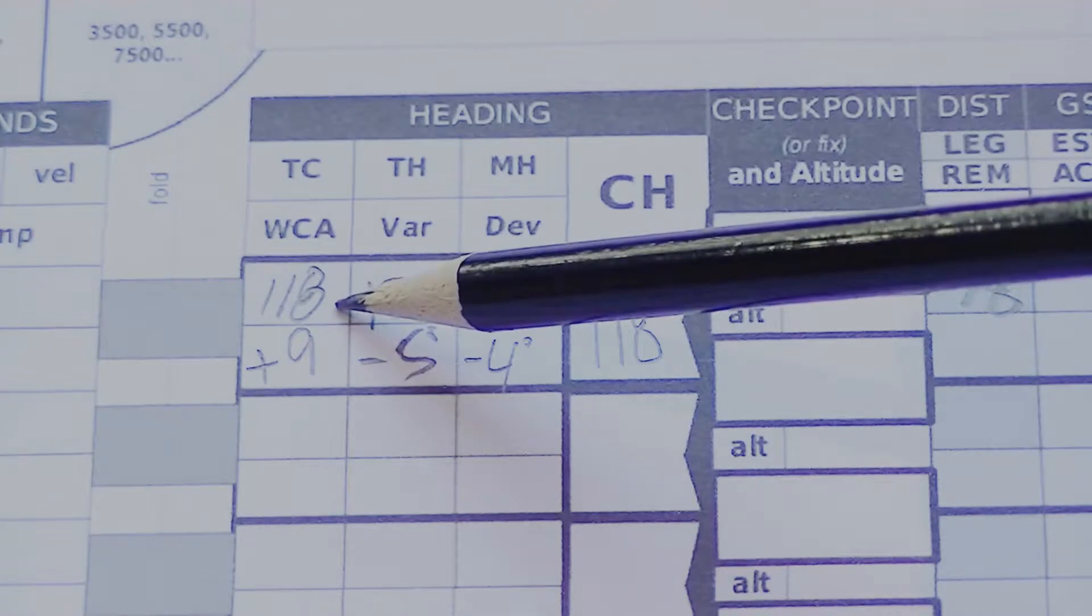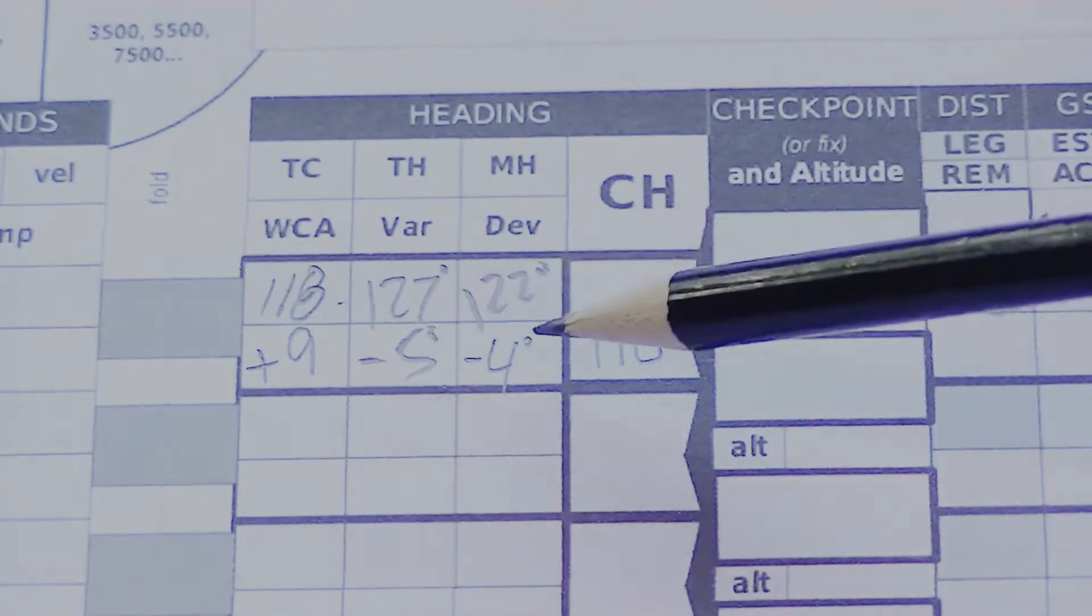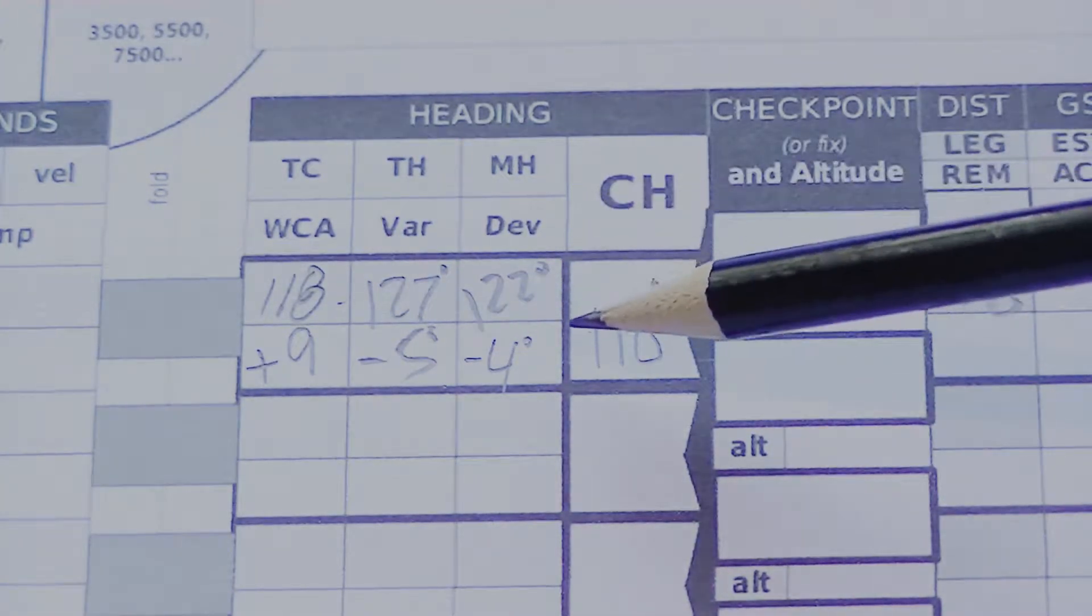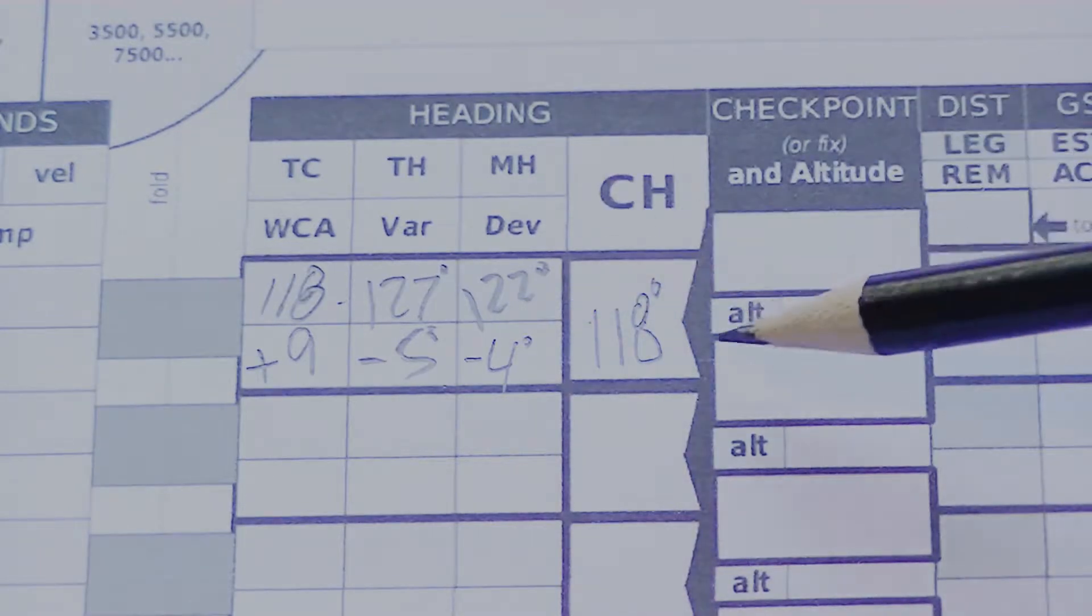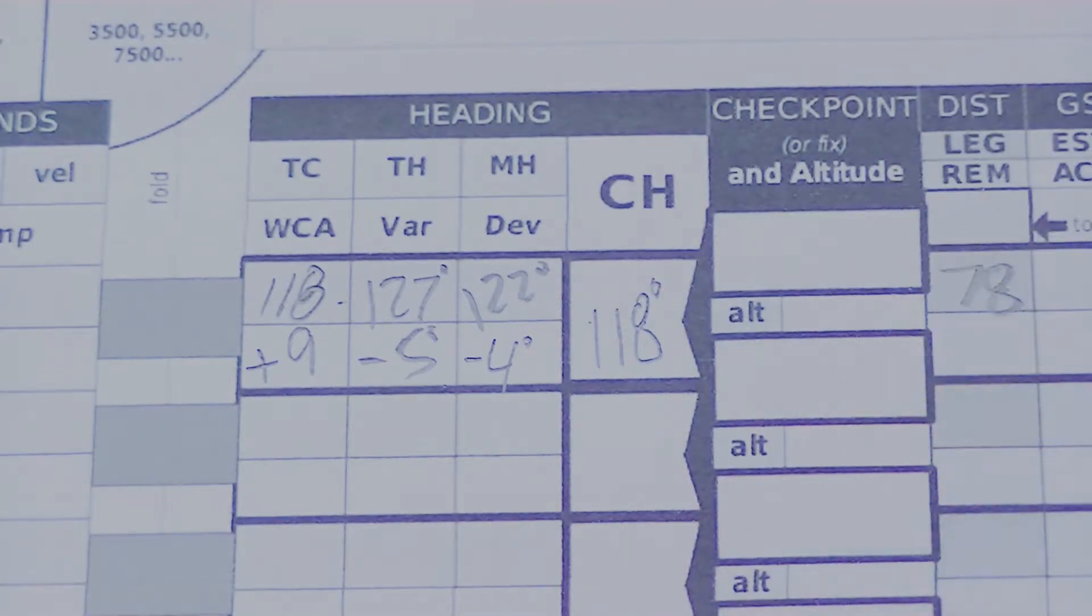Ironically, that's what we started with with our true course. Plugged in the wind, subtracted variation, subtracted out deviation with a compass card, gives us back to 118 degrees. Purely coincidence.